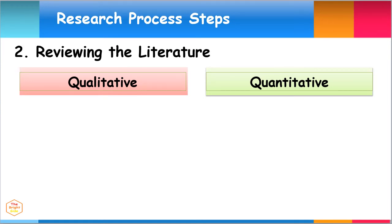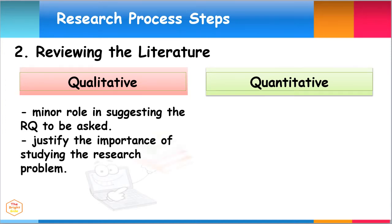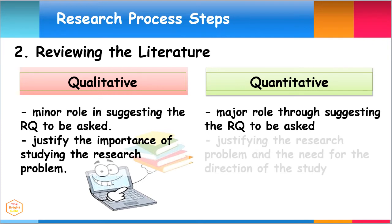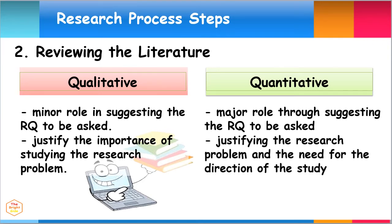In qualitative research, reviewing the literature has a minor role in suggesting research questions to be asked. It justifies the research problem and the need for the direction of the study.